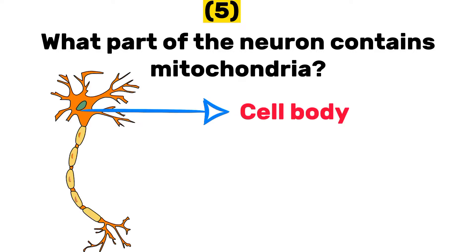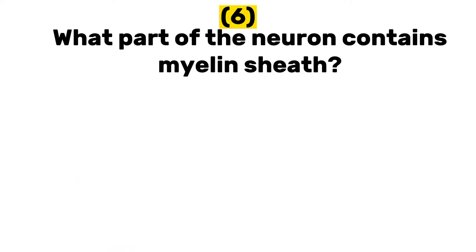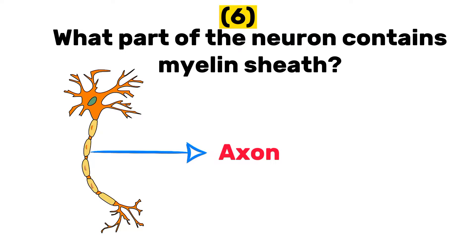Cell body. So the cell body contains mitochondria and other organelles like the nucleus, the lysosomes, and every other organelle that can be found in the cell. Number six: what part of the neuron contains myelin sheaths? Axon. Number seven: name two cells that form myelin sheaths.